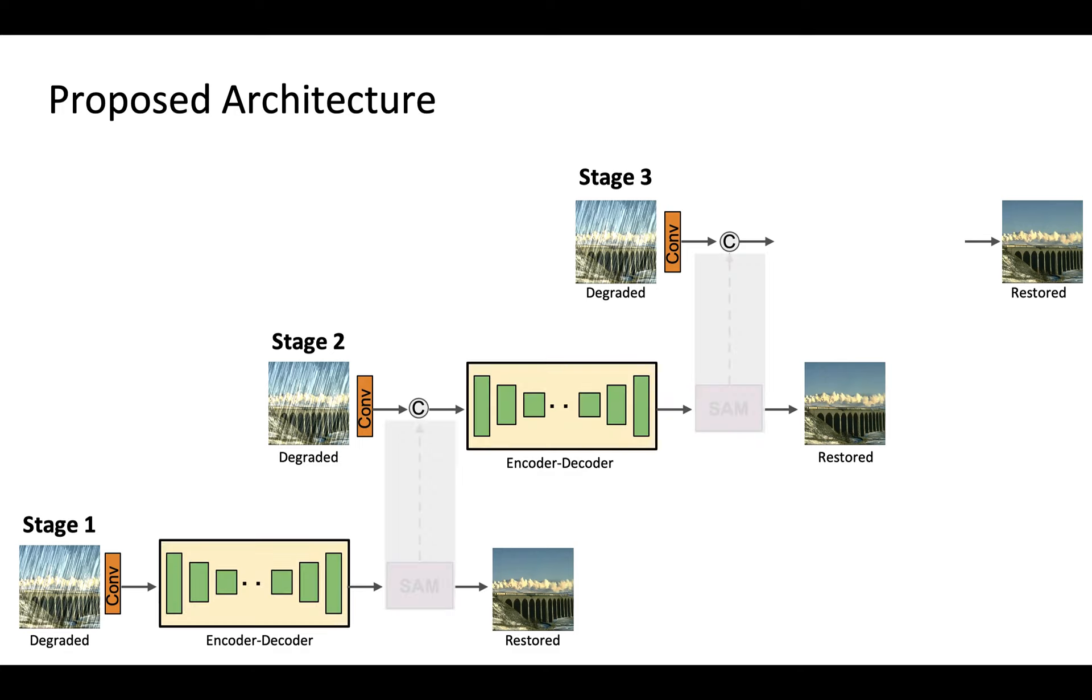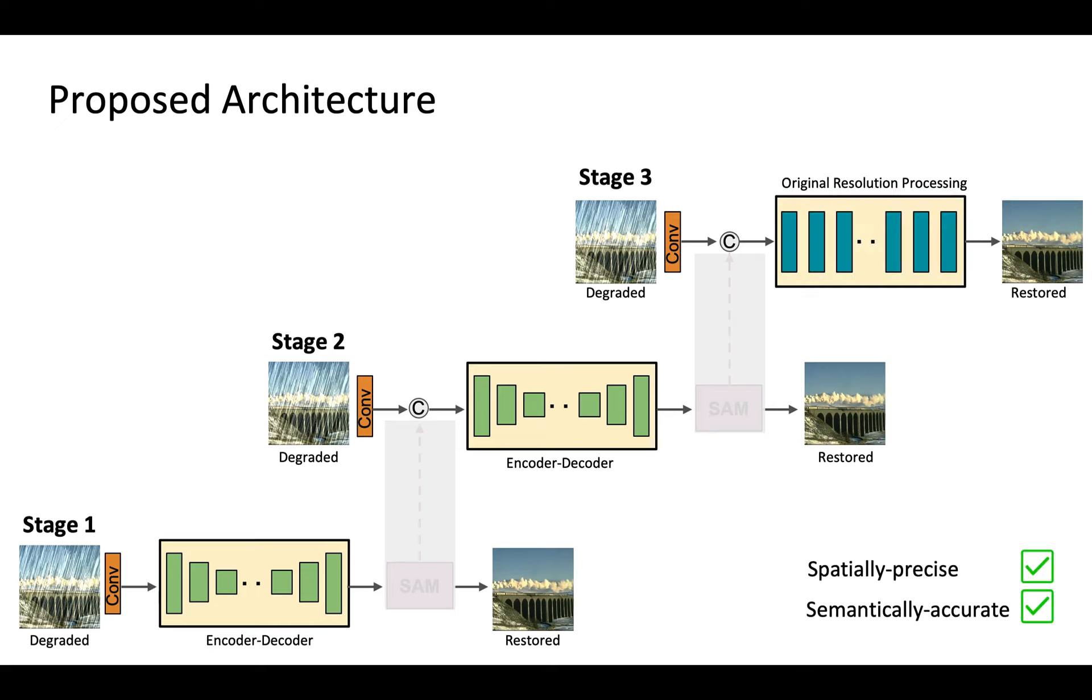For instance, the earlier stages of our network use encoder-decoders to learn multi-scale contextual features, while the last stage operates on the original image resolution to preserve fine spatial details.